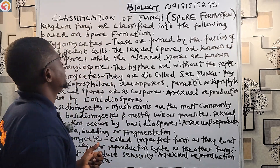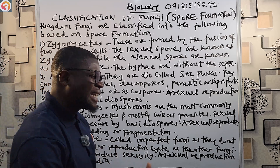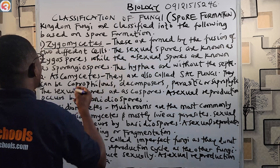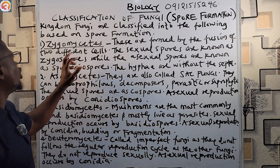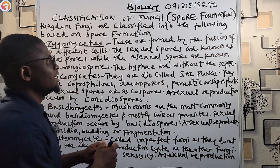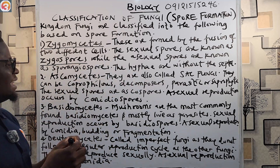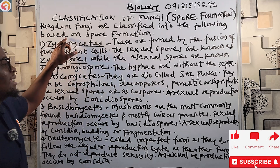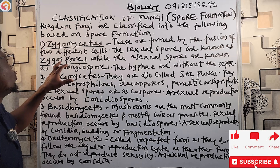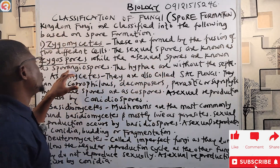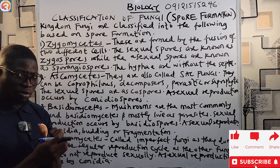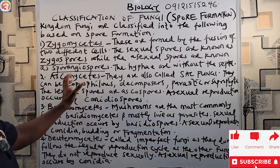Now let's look at the classification of fungi based on spore formation — based on how they form characteristic spores. Number one is zygomycetes. Zygomycetes are formed by the fusion of two different cells coming together. The sexual spores are called zygospores — so the fungi that form zygospores are called zygomycetes. The asexual spores are known as sporangiospores.